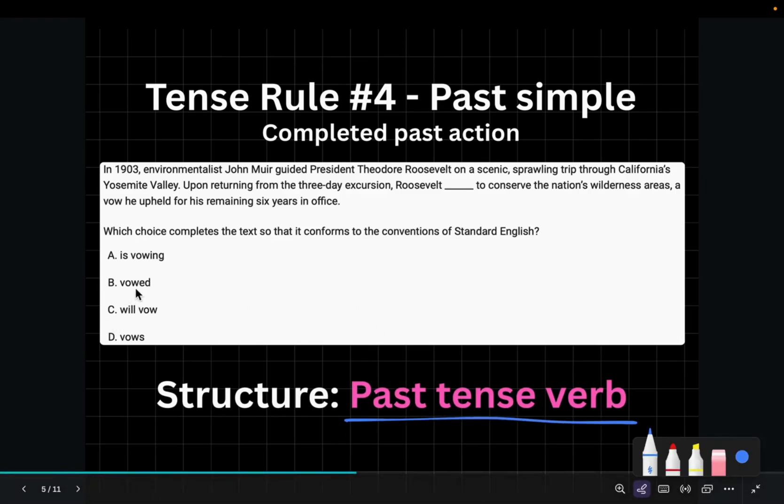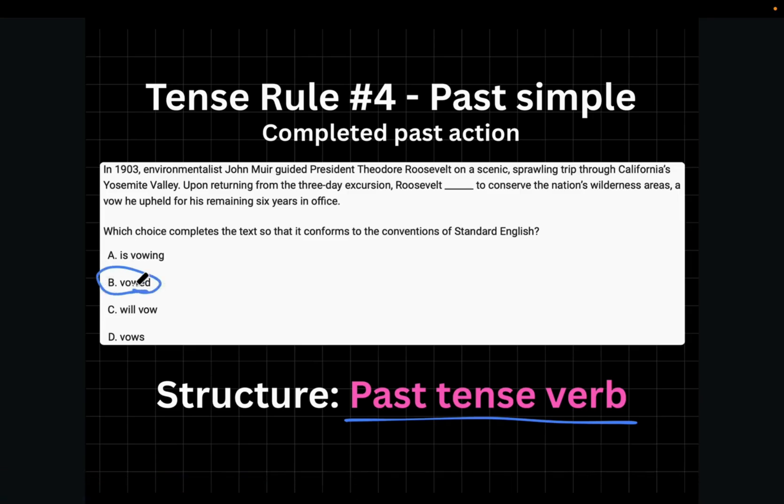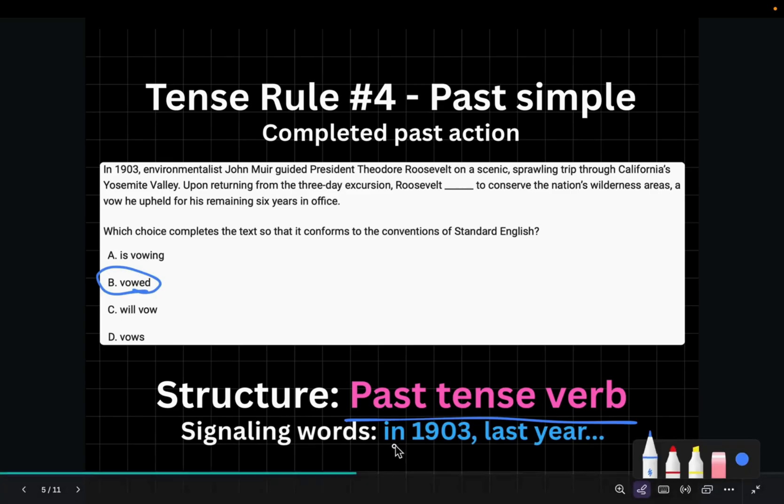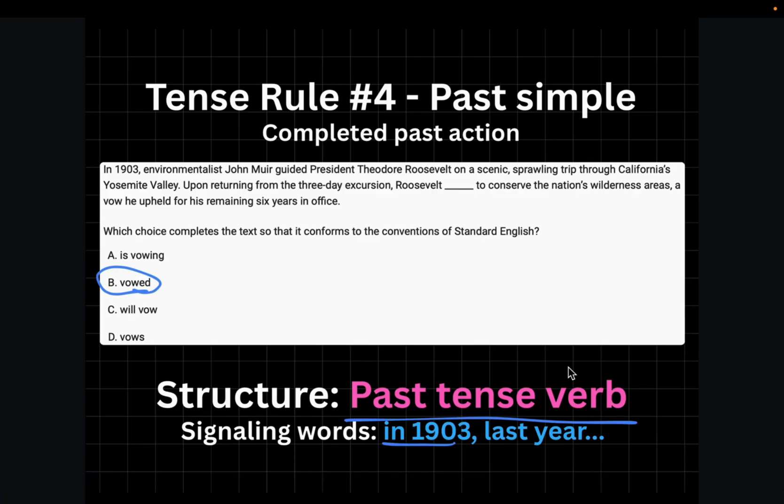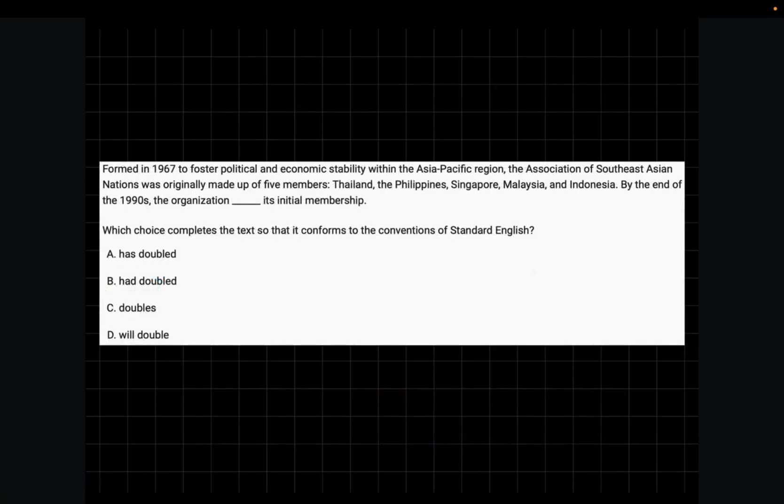Its structure is basically the past tense verb. So in this case, that would mean choice B is correct. Also, sometimes you'll see some signaling words, such as in 1903 in this case, or for example, last year, or anything that has happened in the past, or like any previous time frame. Let's move on to the next question. This one is not as easy as the previous one.